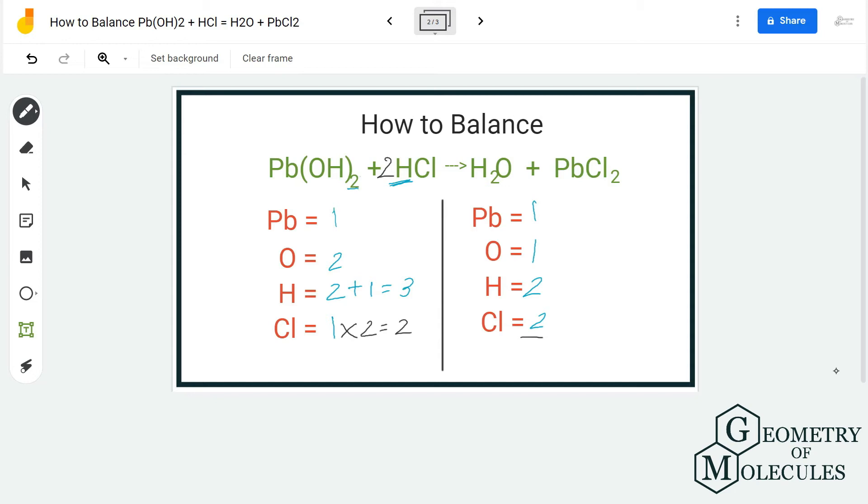So now we have two chlorine atoms on reactant side as well as product side, which means we have to update our hydrogen atoms on the reactant side as well. So now we have two plus two, four hydrogen atoms. Now let's check if the equation is balanced.